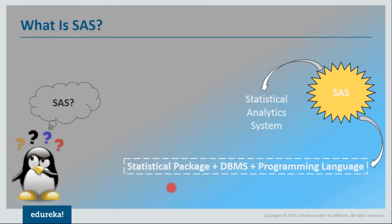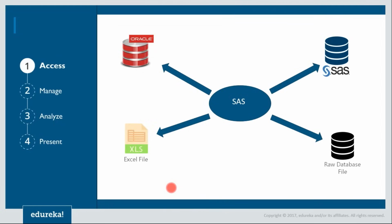Let us take a look at SAS's framework — what are the things that make SAS strong and how it internally becomes very strong. These four capabilities of SAS make it a strong contender in the market: its accessing capabilities, its managing capabilities, the way it analyzes data, and the way it presents it. Let us discuss the first one: accessing data.